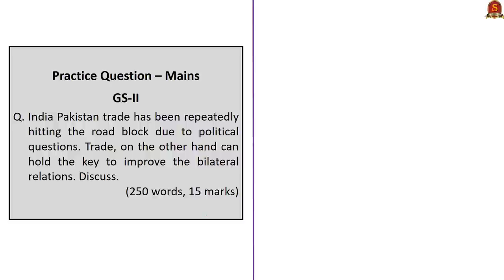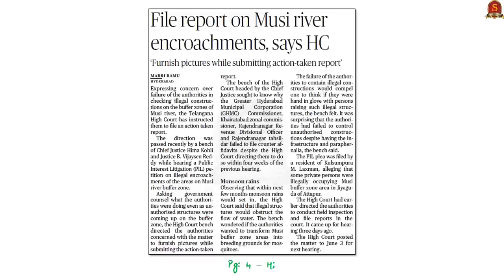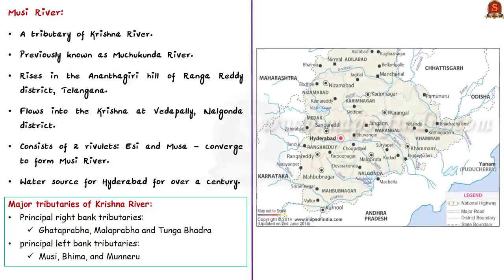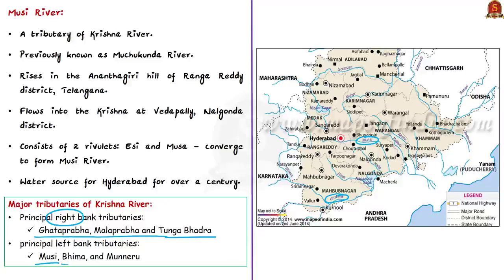This news article concerns the Telangana High Court's concerns over illegal encroachments on river Musi and ecological destruction surrounding it, with instructions to file an action taken report. The Musi River is a tributary of the Krishna River. Among Krishna's major tributaries, Ghataprabha, Malaprabha, and Tungabhadra are principal right bank tributaries, while Musi, Bhima, and Muneru are the principal left bank tributaries.